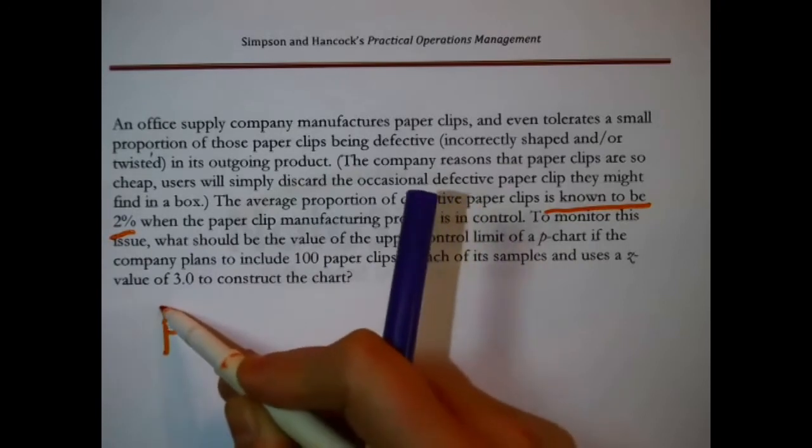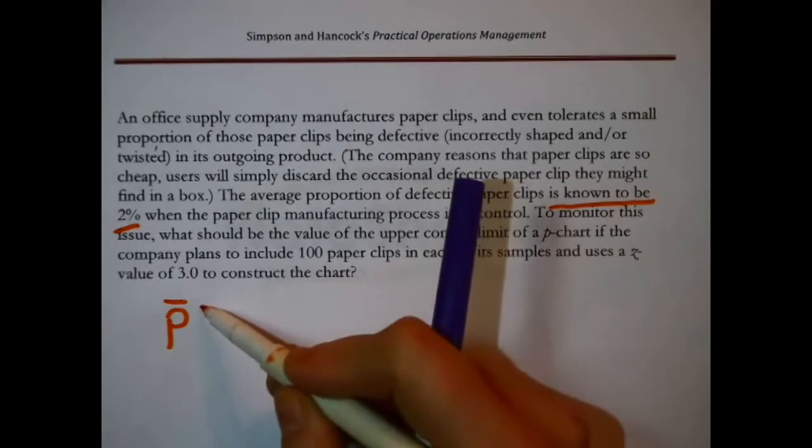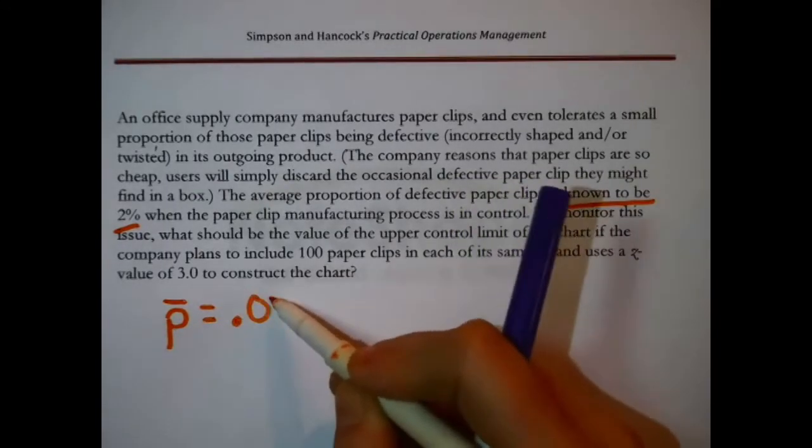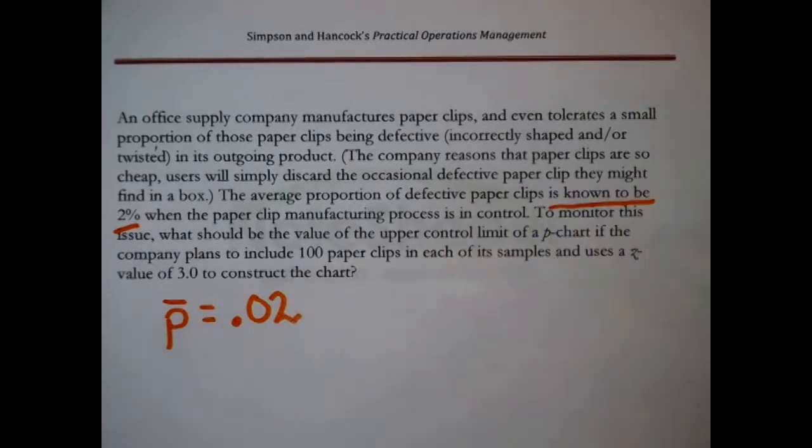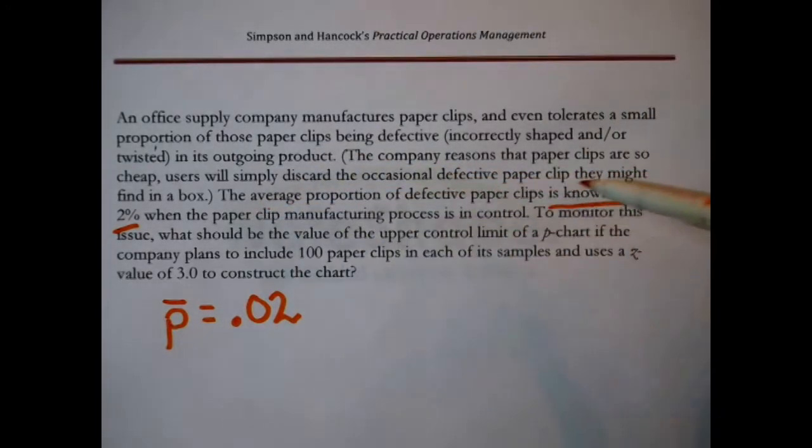More formally, P-bar, average proportion. 2% is, in decimal places, 0.02. When the paper clip manufacturing process is in control, to monitor this issue...